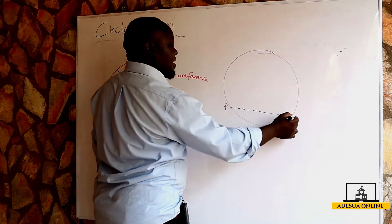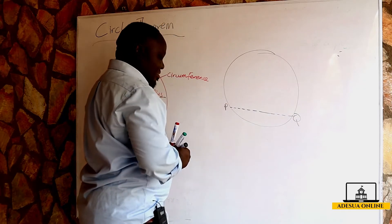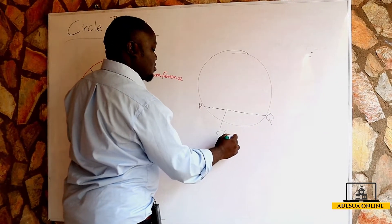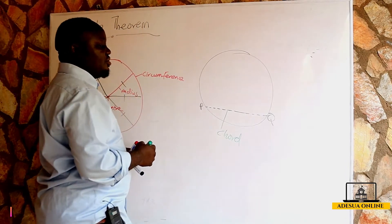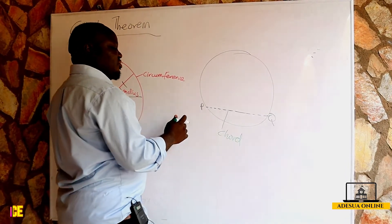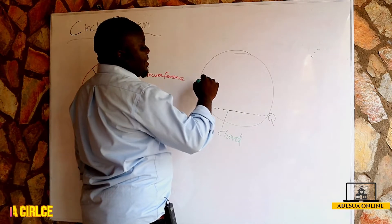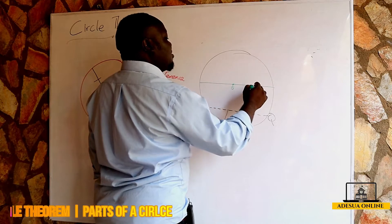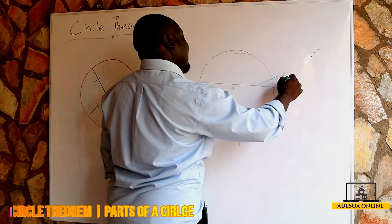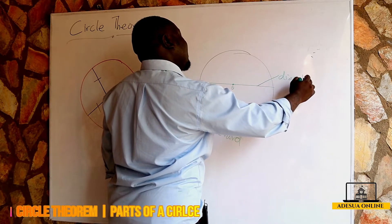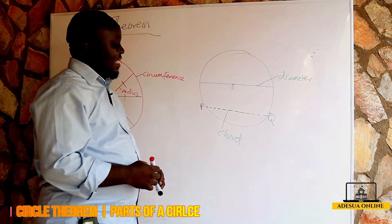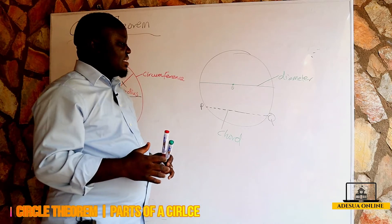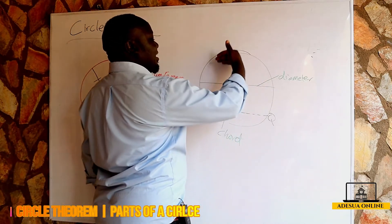Assuming this is P and this is Q — PQ is a chord. Now if PQ is a chord and this is the center O of the circle, when the chord passes through the center, this is what we call a diameter.